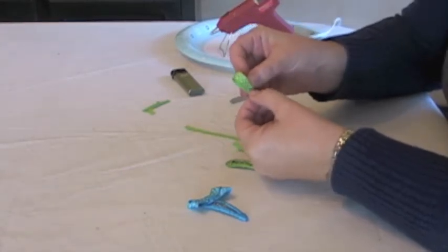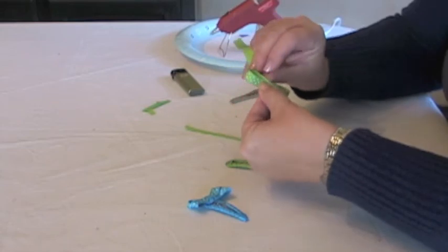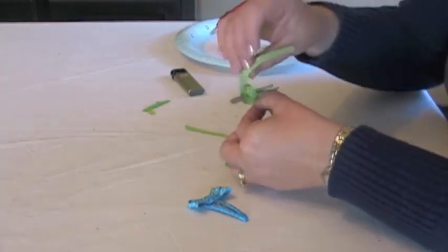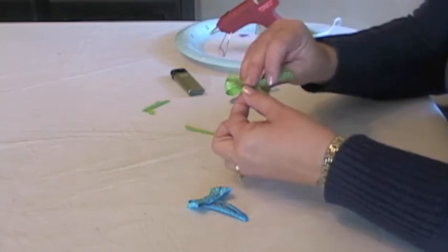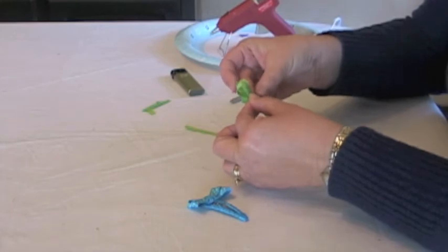To make the bow, I just do loops. These are the first two loops, and then I cross over for the second two loops, sort of like an X or a butterfly.